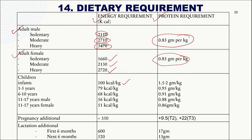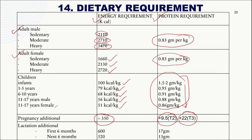For infants, approximately 100 kcal/kg is needed; 1–5 years: 79 kcal/kg; 6–10 years: 68 kcal/kg; 11–17 years males: 56 kcal/kg; 11–17 years females: 51 kcal/kg. Protein requirement reduces from 1.5–2 g/kg in infants to about 0.86 g/kg in 11–17 year females. During pregnancy, an additional 350 kcal and 9.5 g protein in the second trimester and 22 g protein in the third trimester are recommended. During lactation, first six months: 600 extra kcal and 17 g extra protein; next six months: 520 extra kcal and 13 g extra protein.